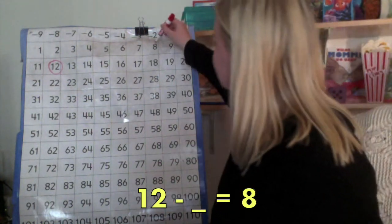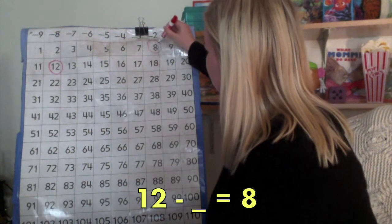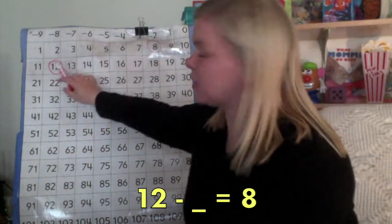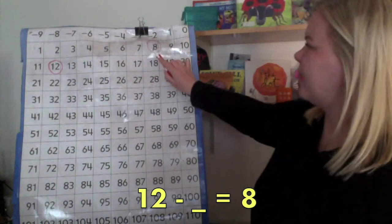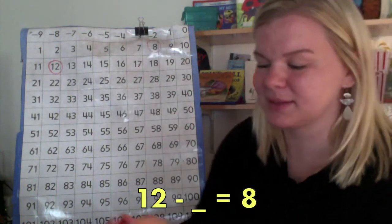And we are hopping all the way back to the number 8. So, I'm going to circle 8. So, we're starting here and seeing how many hops does it take to get back up here. Let's see.